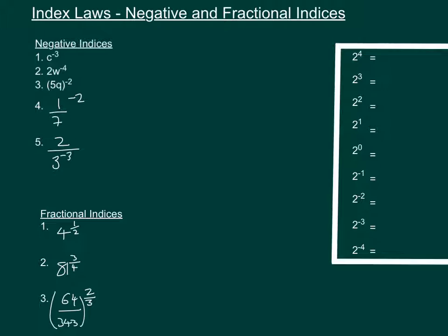So if I start with 2 to the power of 1, that's just 2. And 2 to the power of 2 is 2 times 2, which is 4. Then multiply by 2 again: 8, and then 16. But as we go down, we need to start working out what these are. So 2 to the power of 0 is 1.